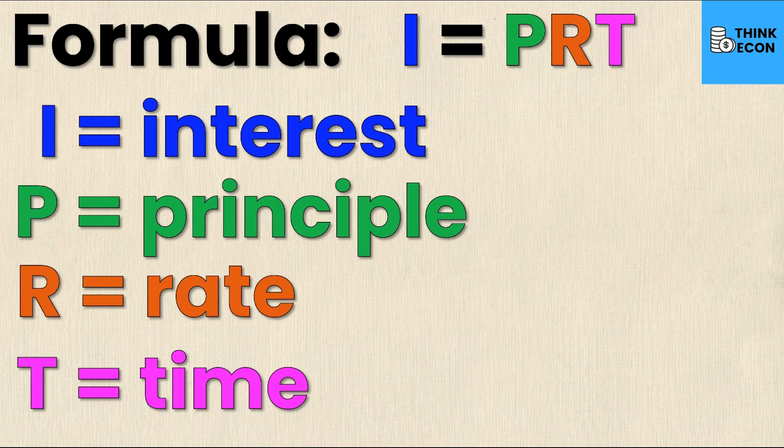For example, an interest rate of 13% would be written as 0.13. If you're not sure how to write it as a decimal, you just take the percentage and divide it by 100. So 13 divided by 100 is 0.13, or 6% for example is 6 divided by 100 which is 0.06.